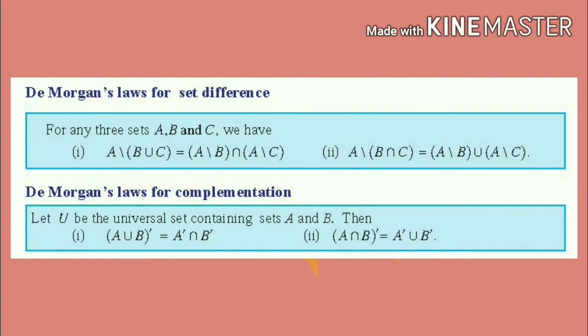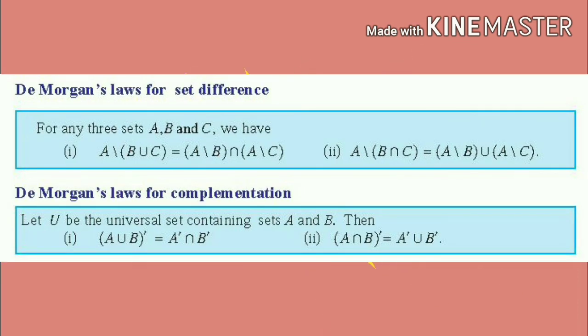The name of the first property is De Morgan's laws for complementation for union. The name of the second property is De Morgan's laws for complementation for intersection.